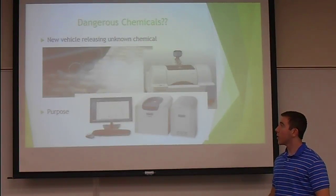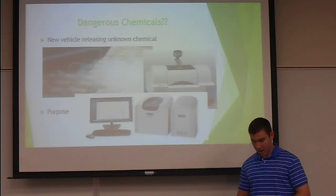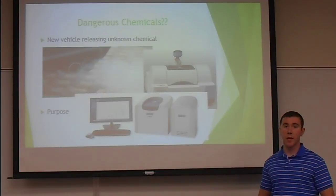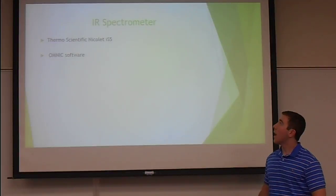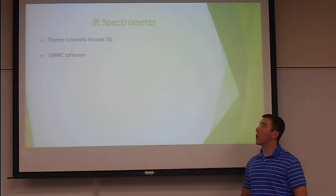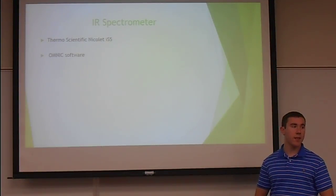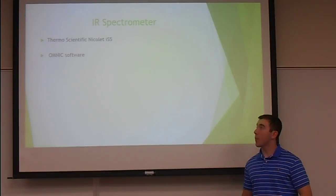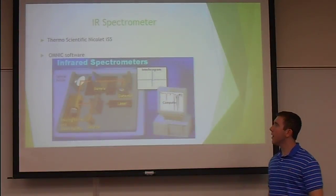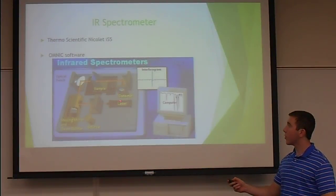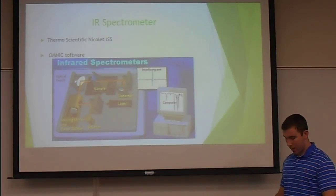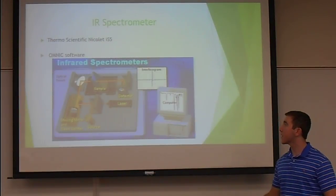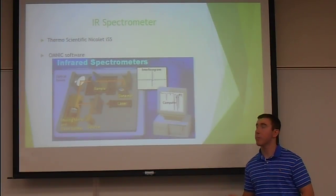To determine this, we will be using infrared and nuclear magnetic resonance spectrometers to obtain spectra. The IR spectra will be determined by using a Thermo Scientific Nicollet IS-5 while operating on OMNIC software. In this picture, you can see that the sample will be placed right here by placing it between two salt plates, and then it will take the scans and send the information over to the computer.